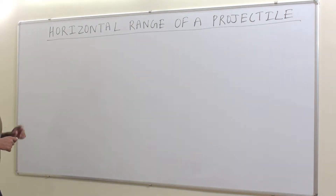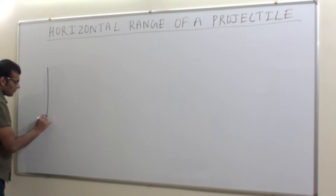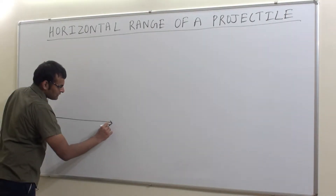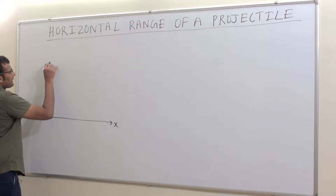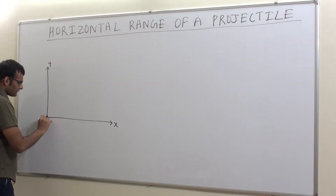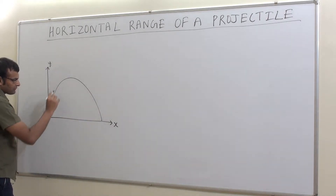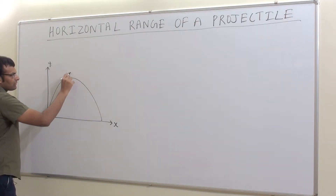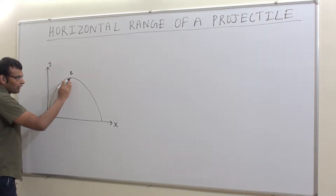Let's see what this is exactly. I am drawing a projectile motion on an x-y axis — let this be x and this be the y axis. I am drawing a ball from point A. This is a projectile motion, and the maximum point reached by the ball or object is B.